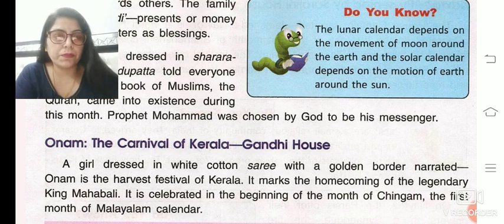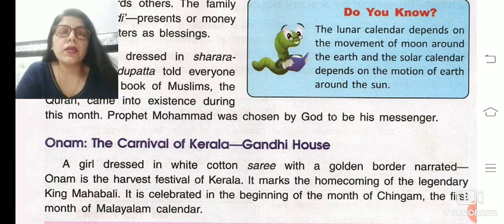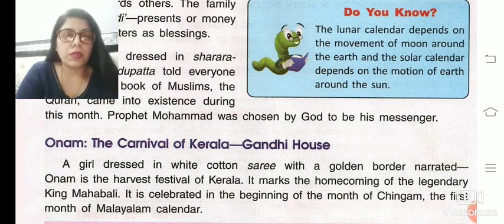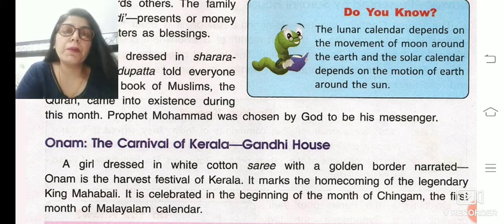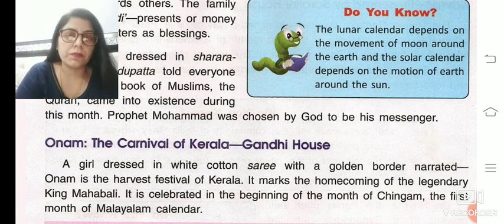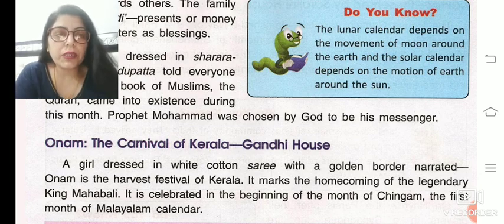Next festival is Onam, which was presented by Gandhi House. It is written as 'The Carnival of Kerala.' First we will learn about the word 'carnival.' A carnival is a public festival celebrated together by all the people of that place. That is why it is named 'The Carnival of Kerala' — all people of Kerala celebrate it publicly together.